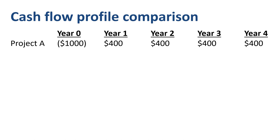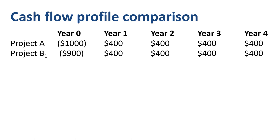Project B has an upfront investment of $900, shown as a negative — an outflow — and four years of nominal benefits of $400 each, shown as positives, inflows.